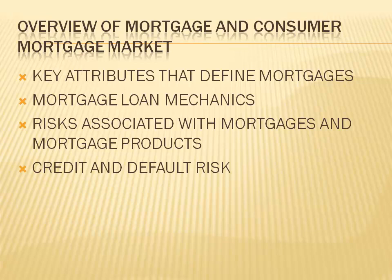The Negative Amortization ARM has a very low initial set rate that adjusts on a monthly basis. But the minimum payment is adjusted only annually, and the payment cap limits payment increases at reset. As a result, it is possible for the mortgage payment to be less than the interest payable when interest rates rise significantly. The loan amount is increased by the deficient interest, thereby resulting in negative amortization. There will be a significant payment increase when it is time to start amortizing the principal balance.